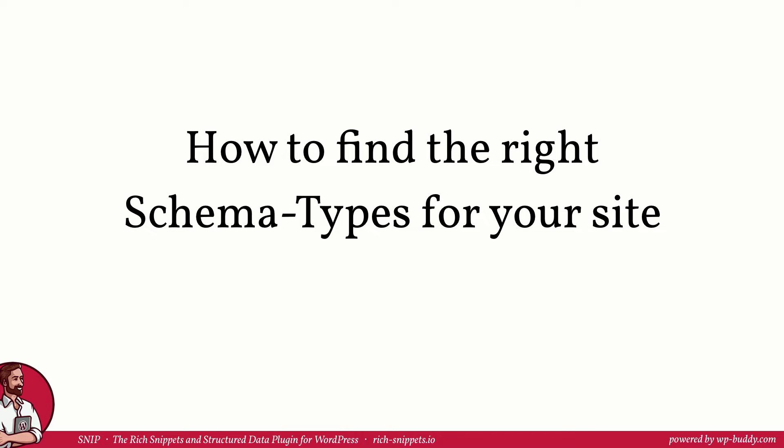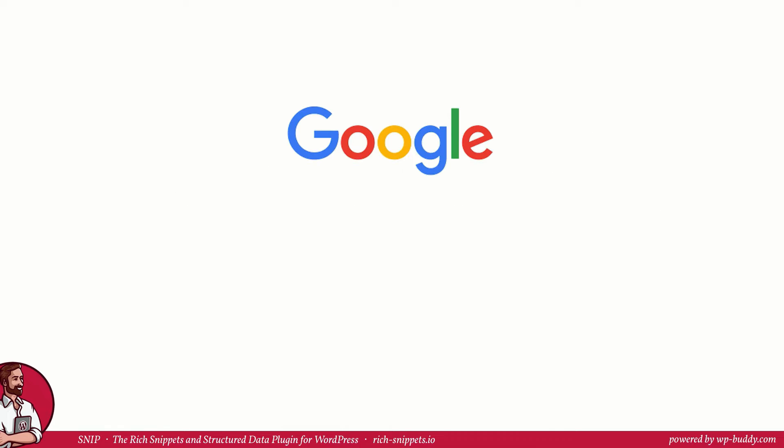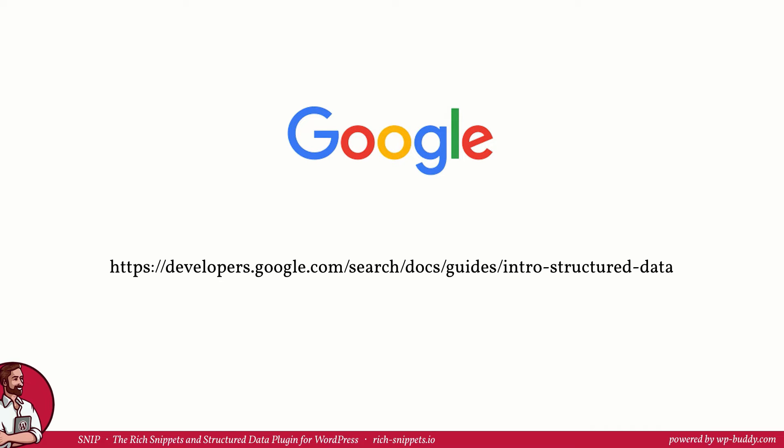In this lesson I want to tell you how to find the right schema types for your site. I'm focusing on Google because it's the major search engine out there and we all do SEO mostly only for Google. That doesn't mean that it doesn't work for other search engines as well. It just means that Google has its own guidelines that you need to understand in order to get rich snippets into your search results. And on this page you can find it. In the last lesson you have noticed that schema.org is a huge list of things you can use to mark up your content.